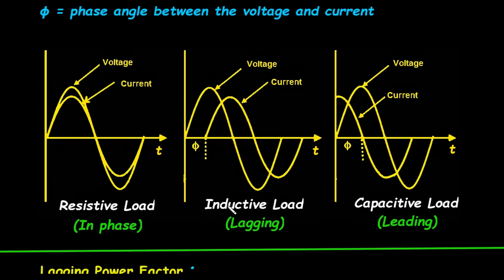Next, let's look at an inductive load. In this graph, you can see that the current waveform is shifted to the right compared to the voltage waveform. This means the current reaches its peak value after the voltage does. We describe this by saying the current lags behind the voltage. The time difference between them is represented by the phase angle Φ. This condition is known as a lagging power factor.